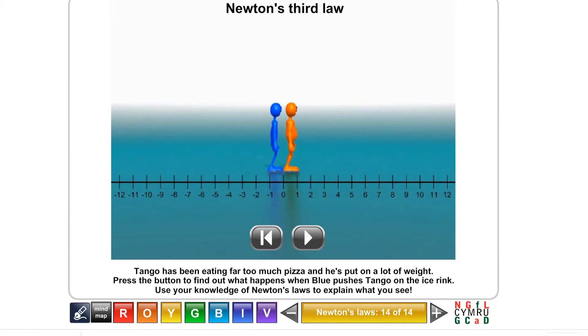As it says at the bottom, tango has been eating far too much pizza and he's put on a lot of weight. You can actually see he's got a little bit of a belly. Press the button to find out what happens when blue pushes tango on the ice rink. Here we go. Pause the video and see if you can make sense of that to yourself. Now what you should have worked out is because tango is a larger mass than blue, if you remember, acceleration is inversely proportional to mass, meaning the bigger the mass, the smaller the acceleration.